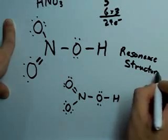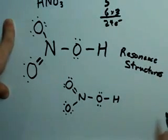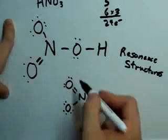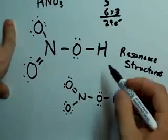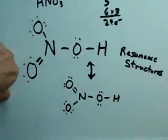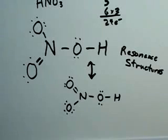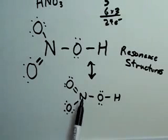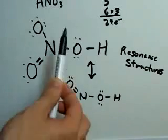Now, the way that we show that on a Lewis structure, if they ask you to show all resonance structures, is to draw out the two Lewis diagrams and simply draw a double-sided arrow in between them. That shows that it can easily switch from here to here, back here to here to here.